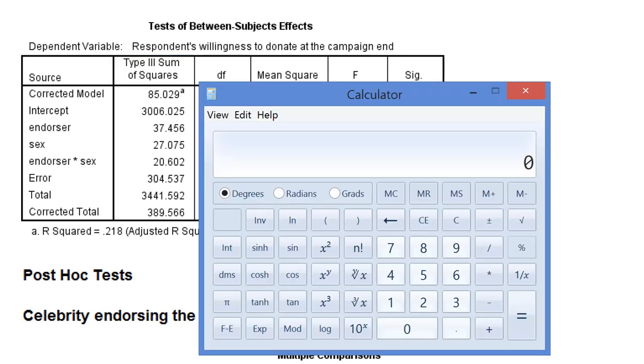As an example, let's calculate eta-square for the effect of endorser on the willingness to donate.